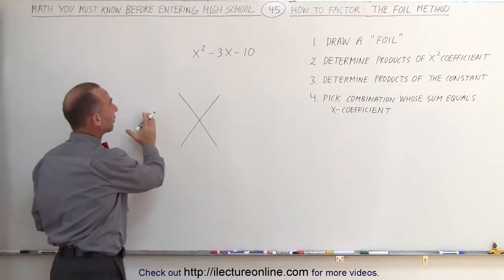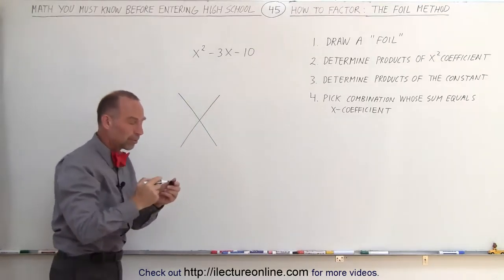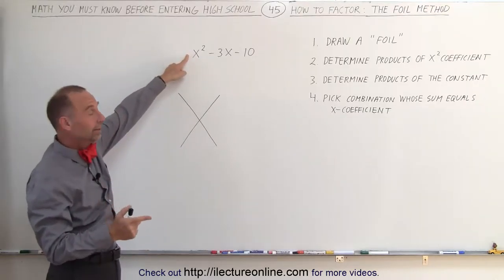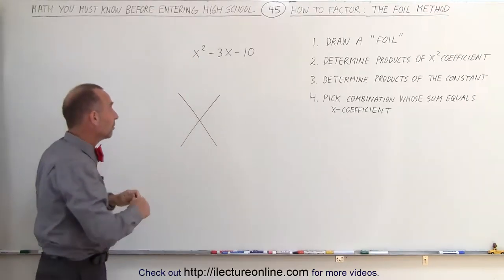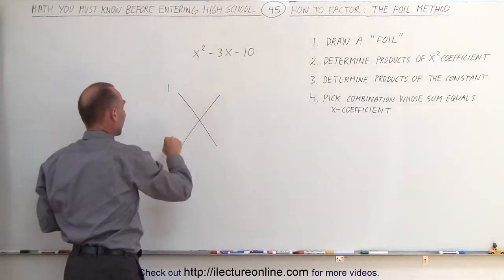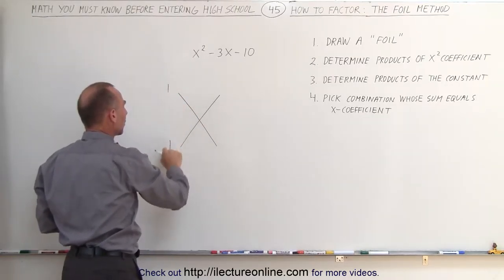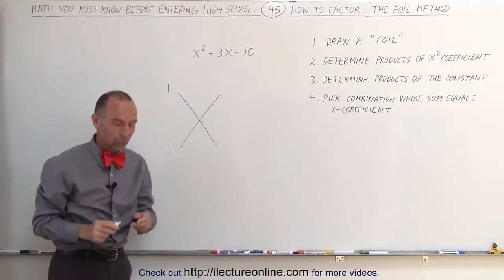Next, on the left side, we're going to determine what we call the products of the x squared coefficient. The coefficient of the x squared term in this case is a 1, so the only way you get a 1 is simply by multiplying a 1 times a 1. So on the left side of the cross, you draw the two numbers, then when you multiply them together, you get the coefficient of the x squared.